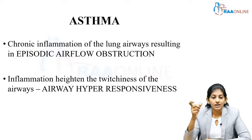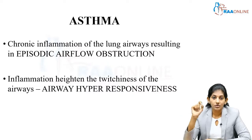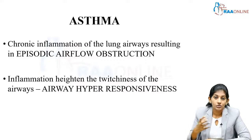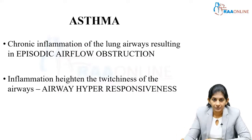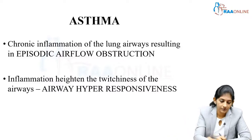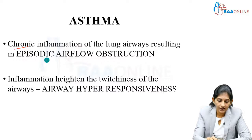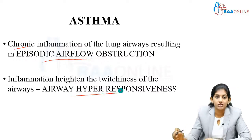There is something called twitchiness of the airways. There are many allergens in the environment, and these allergens can cause twitchiness of the airways in asthmatic individuals. They have a very hyper-responsive airway. The key terms to be familiar with are: chronic inflammation, episodic airflow limitation, and airway hyper-responsiveness.